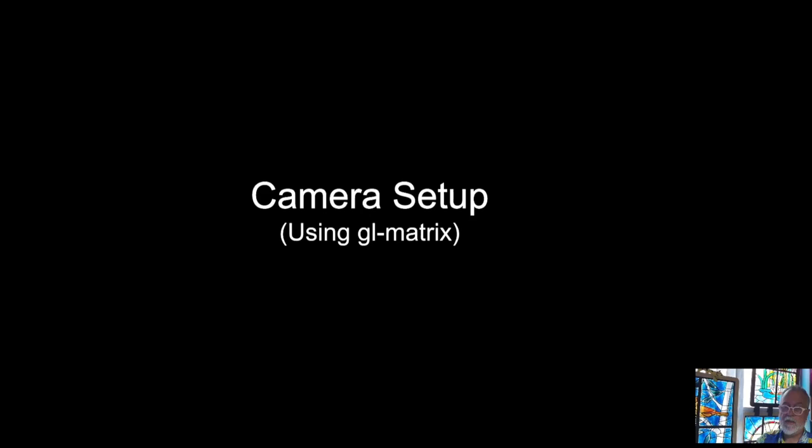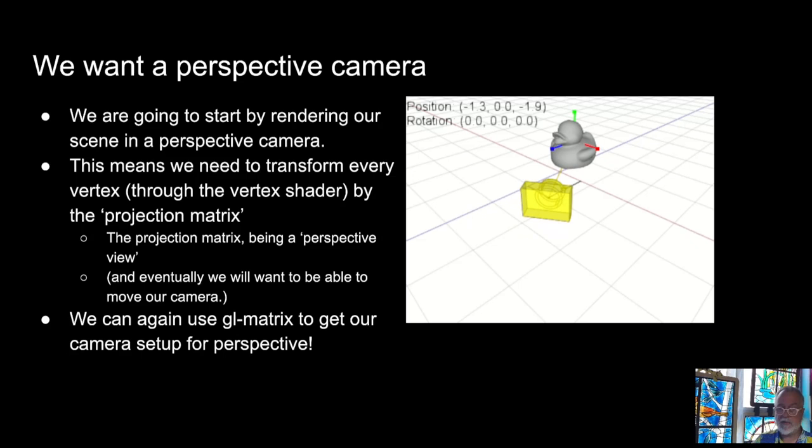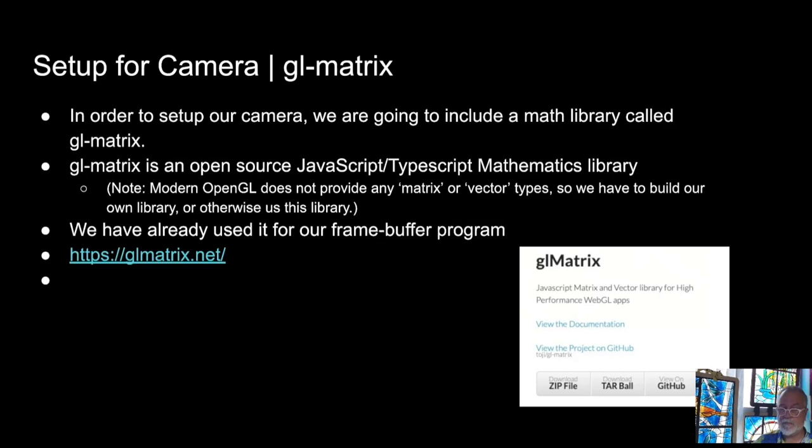And then the good news is that after you've watched all of this stuff by Cem Yuksel and you've had this reminder in my view here, is that we actually don't have to do all of this stuff because we have this GL matrix camera. So we're going to start by rendering in perspective and we're going to transform every vertex through the projection matrix and the view matrix. And then we'll get that all set up.